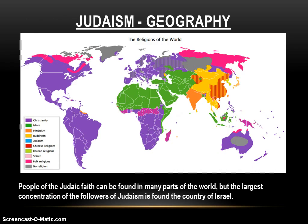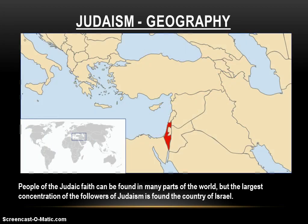People of the Jewish faith can be found in many parts of the world, but the largest concentration of followers of Judaism can be found in the country of Israel. When you look at this map showing all the other religions, notice how minuscule the percentage of the Judaic faith is compared to the others, because of the major monotheistic religions, Judaism is the smallest.